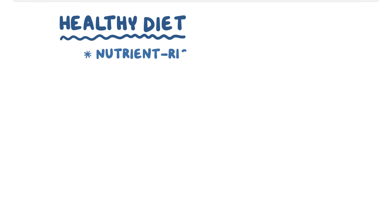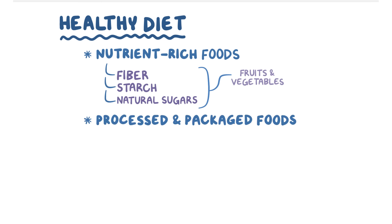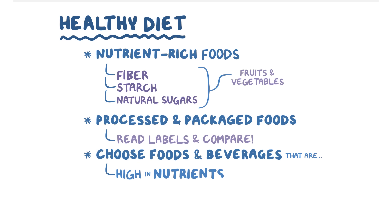Eating a healthy diet means choosing foods that are as nutrient-rich as possible. Foods that contain fiber, starch, and natural sugars like fruits and vegetables tend to be richer in nutrients than those with added sugars. Since processed and packaged foods are a part of most people's diets, carefully reading nutrition labels can help you compare foods and choose more nutrient-rich options. Generally speaking, picking foods and beverages that are higher in nutrients like fiber and lower in added sugars is best.